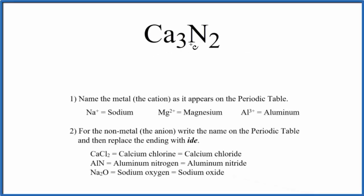To write the name for Ca3N2, we first need to realize we have an ionic compound. That's because we have a metal and a non-metal. We have a metal and a non-metal bonded together, it's an ionic compound.